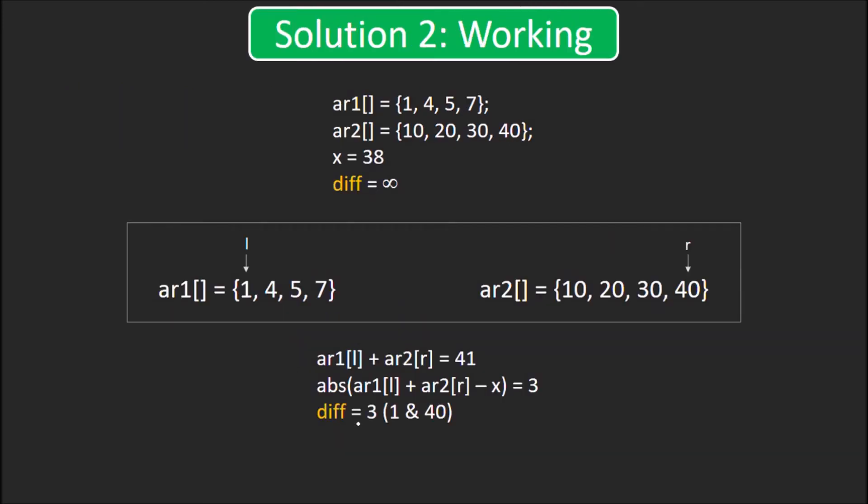Let's try to see the working of solution 2 with an example. We are given these two arrays and x is 38. Diff is infinite initially. L is at starting of ar1 and r is at end of ar2. Now sum of elements at position l and r is 41. The difference between the sum and x is 3, which is less than the current value of diff which was infinite.